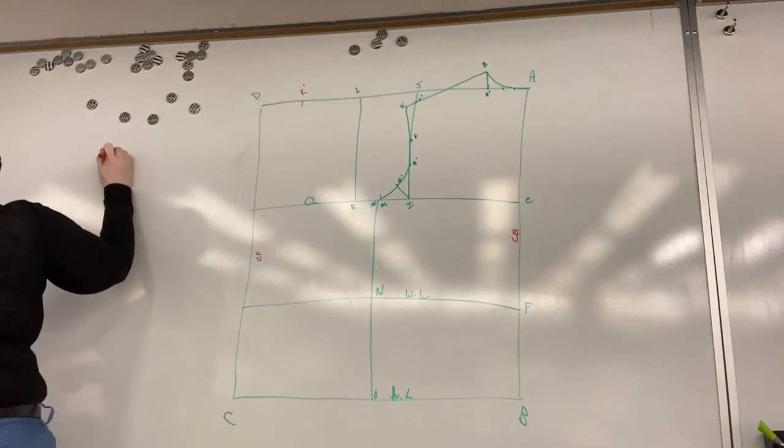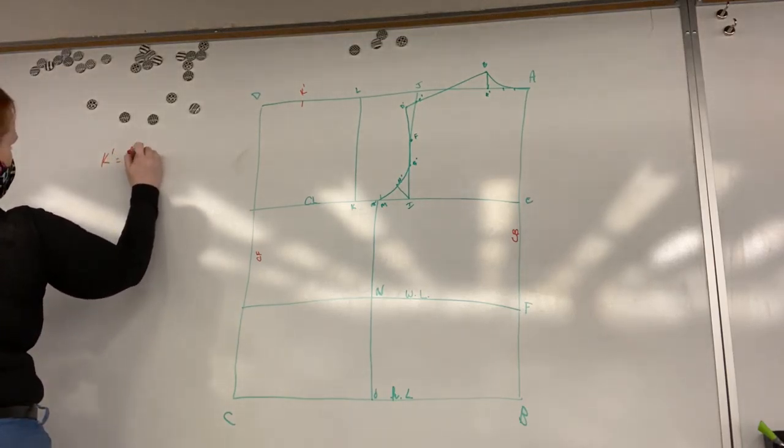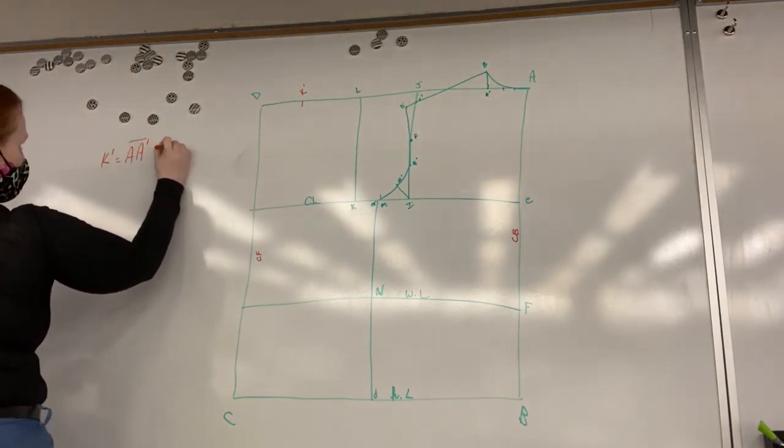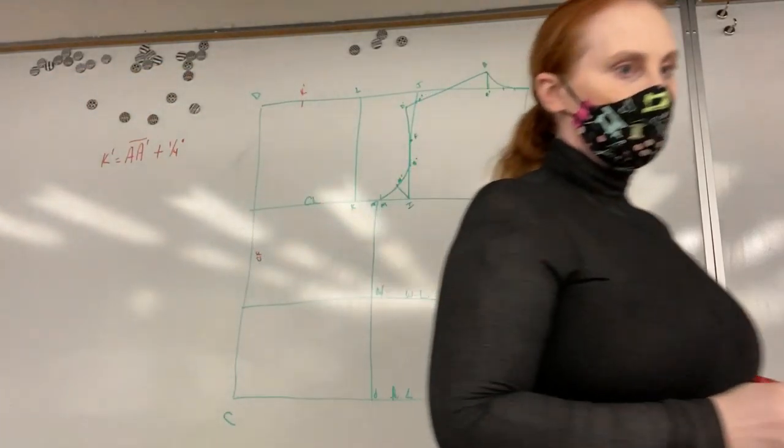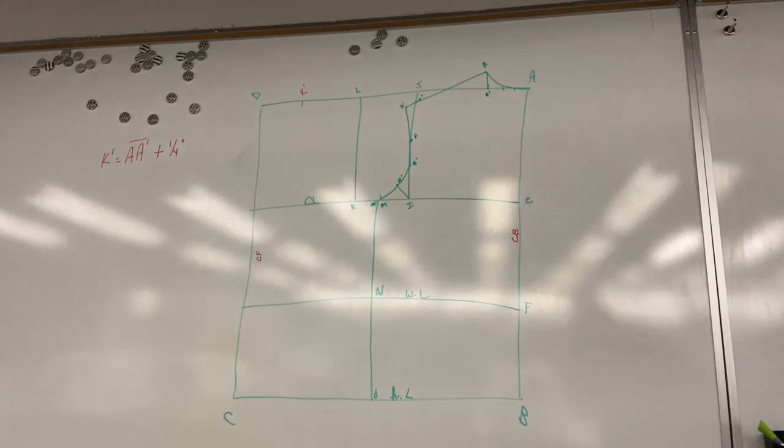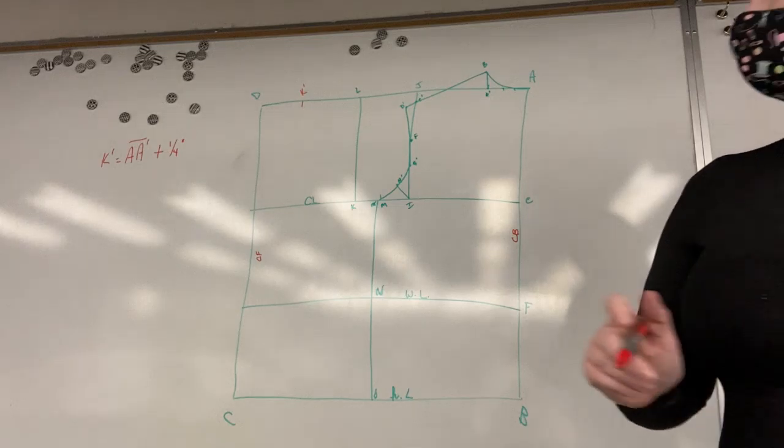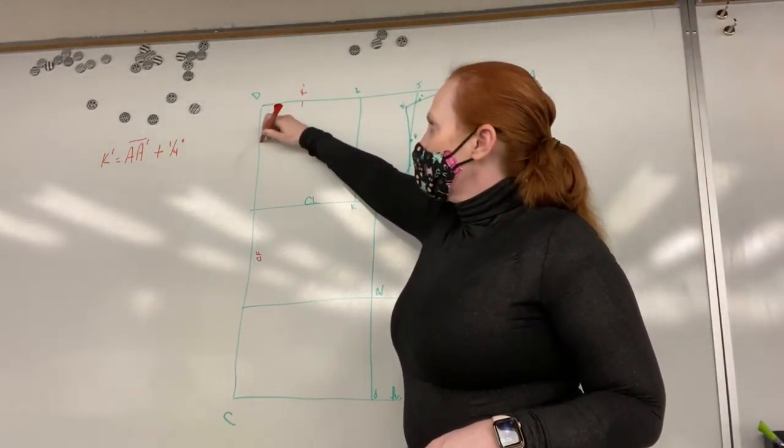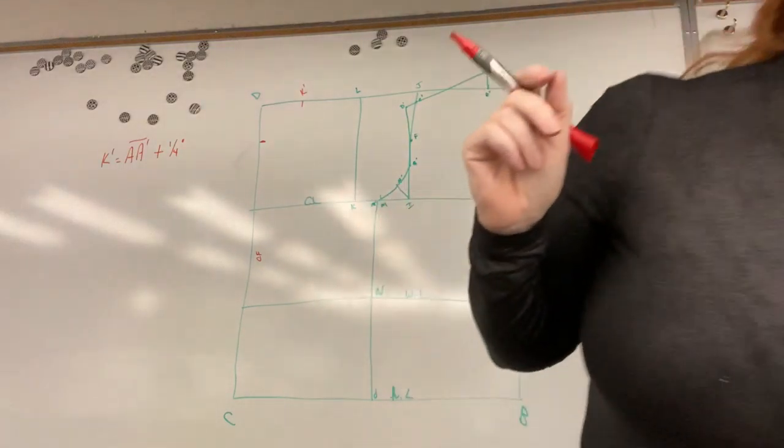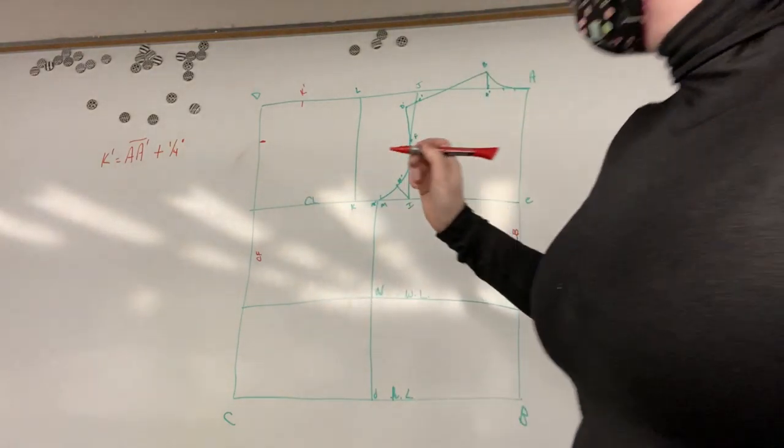So K junior is A to A junior plus a quarter of an inch. We are going to come the same distance down the side from D and this is going to become I junior.